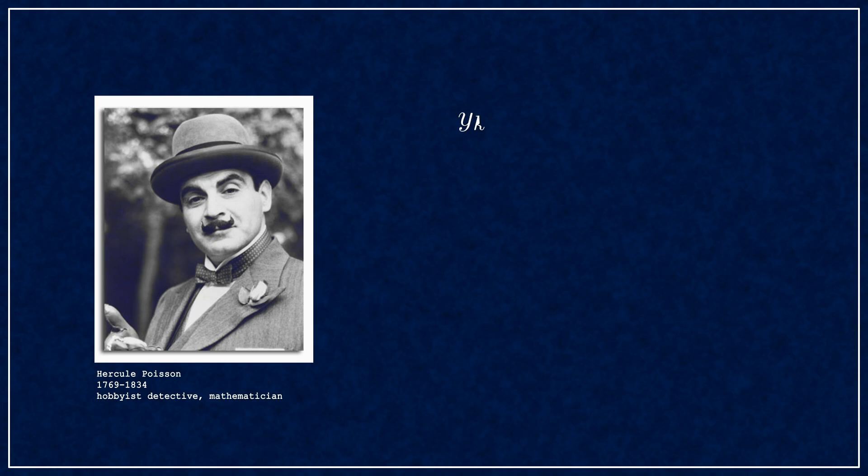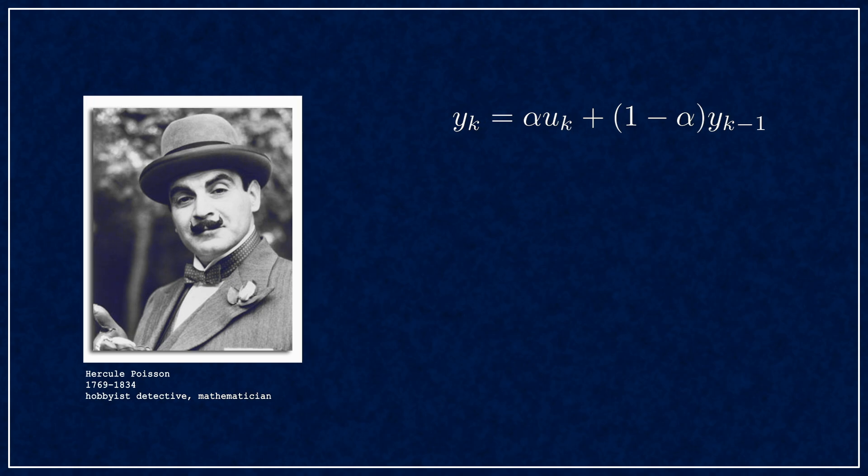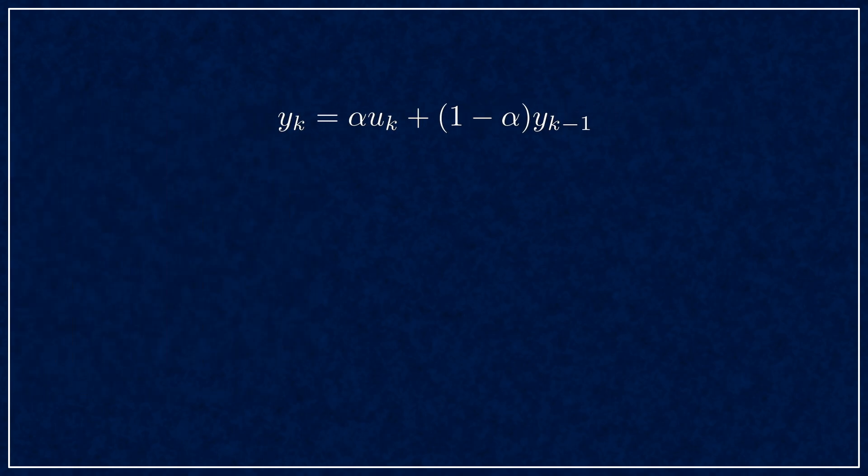EMA was first used by French mathematician Poisson in the 19th century, and here's the definition. The output y is the sum of the input u and the previous output, multiplied by complementary coefficients α and 1-α.